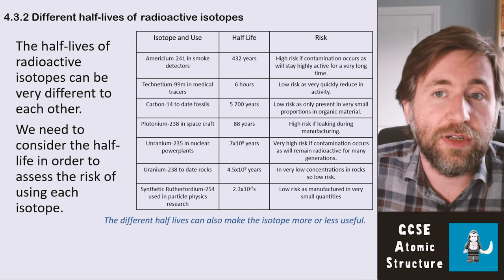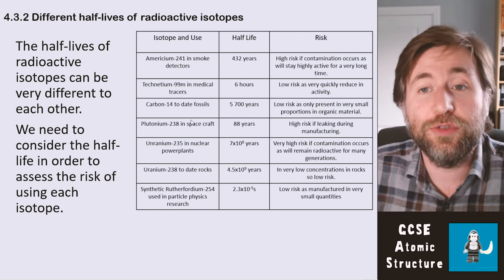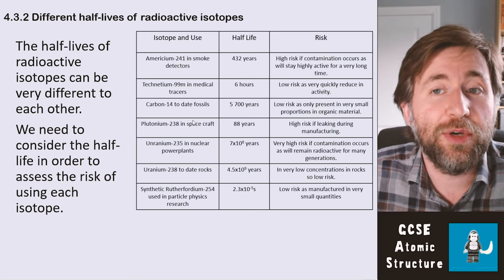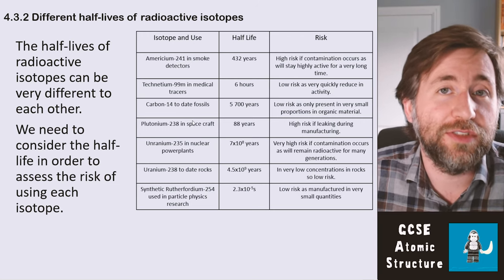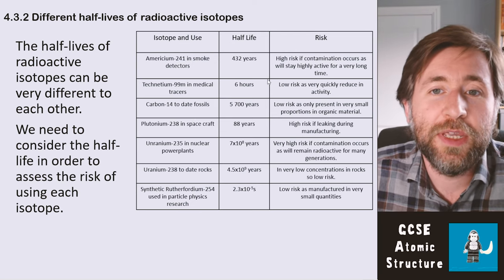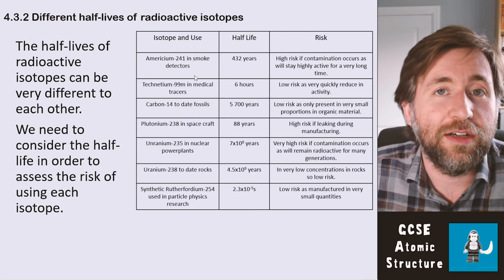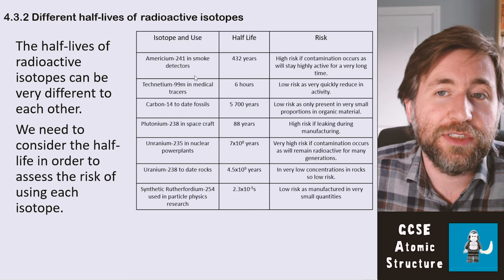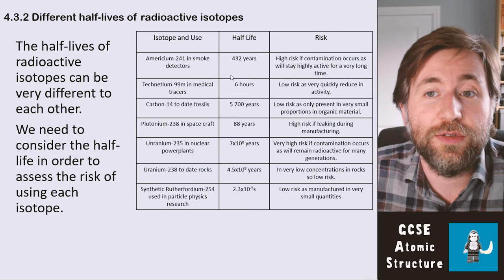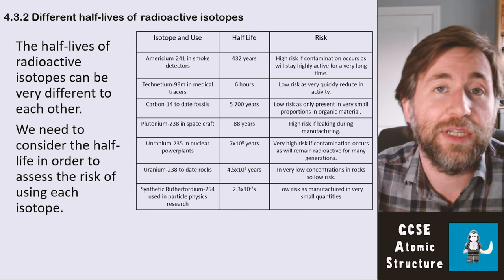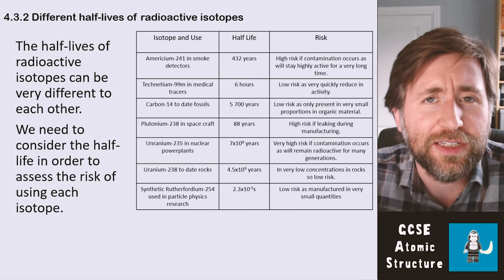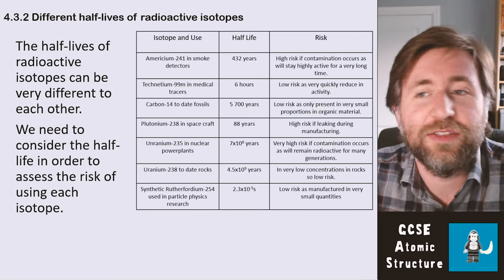Here are some examples — you don't need to know these, but it might be useful to have some idea of the relative sizes so you can discuss them in questions. Smoke detectors use an isotope called americium, which has a half-life of 432 years. That's quite a high risk if contamination occurs, because it will remain radioactive for a very long time.